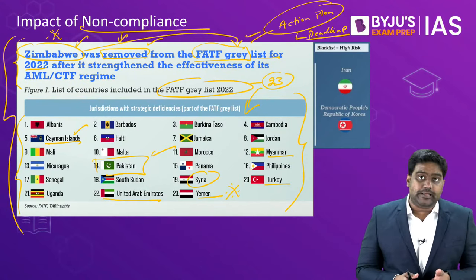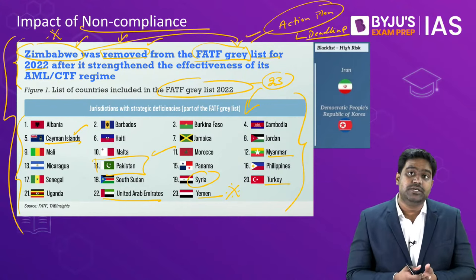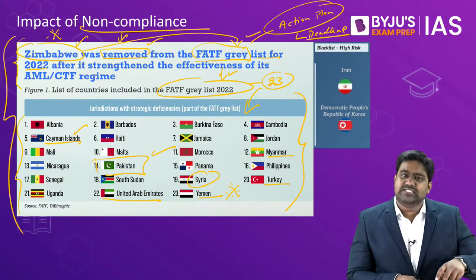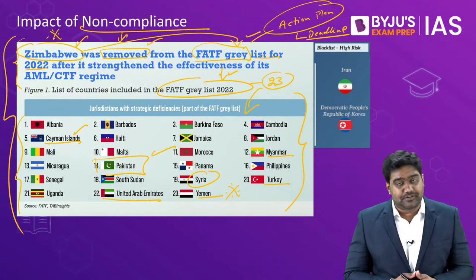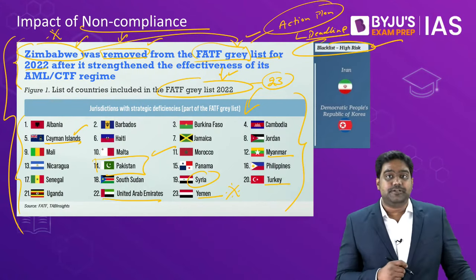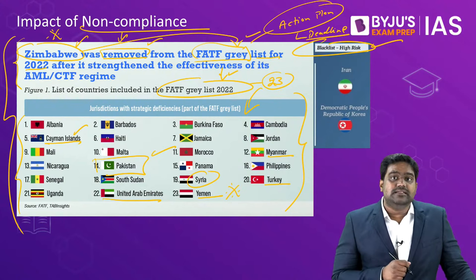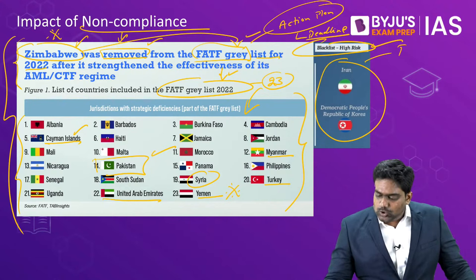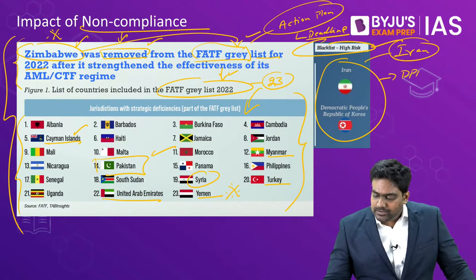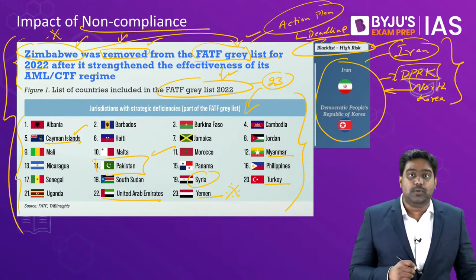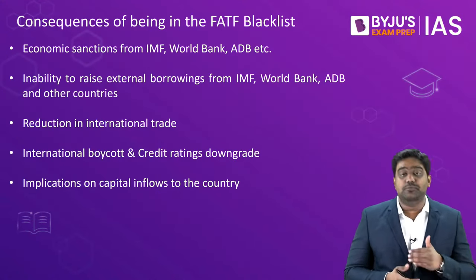If a grey-listed country is still not cooperating or making very slow progress, FATF might retain it on the grey list. In the worst case, if the country is deliberately encouraging money laundering and terror financing and not cooperating, it can be blacklisted. As of today, only two countries have been blacklisted by FATF — declared as non-cooperative jurisdictions — and these are Iran and DPRK (the Democratic People's Republic of Korea), which is North Korea.